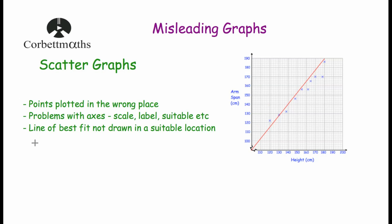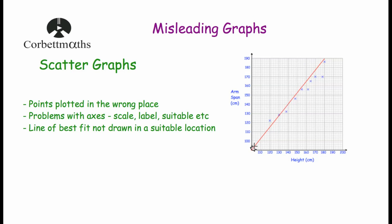Finally, with scatter graphs, watch out for whether the line of best fit is drawn in a suitable location. A poorly positioned line would have loads of points to one side and not be close to the points. The red line of best fit shown here is not in a great location — there are lots of points beneath it and only one or two above. A slightly better line could be drawn. For positive correlation, some students think the line of best fit has to start in the bottom left corner, but it doesn't — it can be anywhere, as long as it's close to the points and goes through as many as possible.